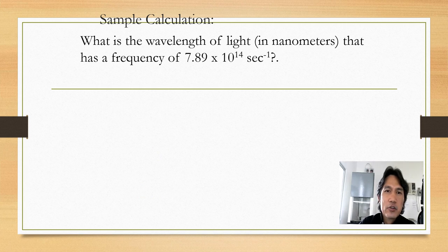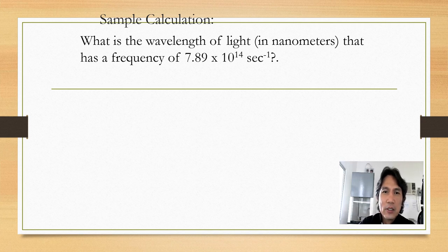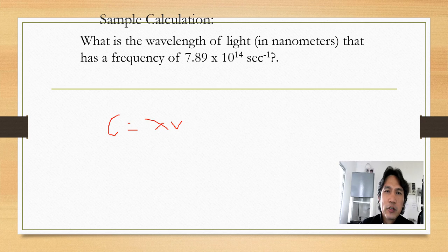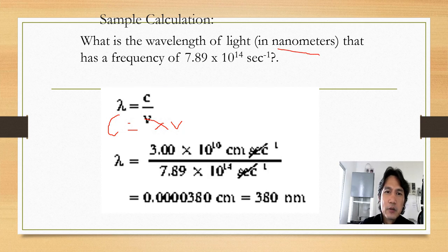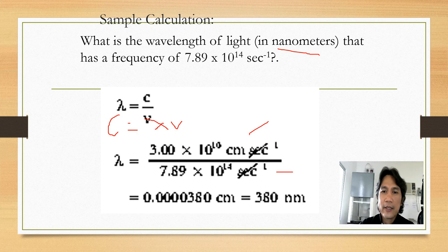Another sample calculation: what is the wavelength of light in nanometers that has a frequency of 7.89 times 10 to the positive 14 reciprocal seconds? Using the formula C = λν, and solving for lambda: lambda equals C divided by frequency, which equals 7.89 times 10 to the positive 14 reciprocal seconds. The answer is 380 nanometers.